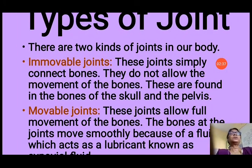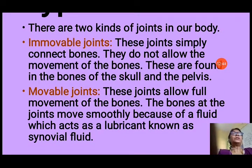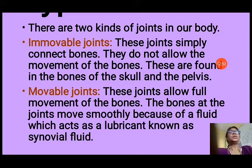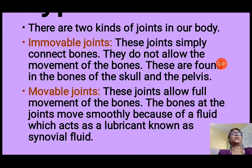Now, the types of joints. There are mainly two kinds of joints in our body: immovable joints and movable joints. Immovable joints only connect the bones — they do not allow any movement. These are found in the bones of the skull and pelvis. The only movable joint in the skull is the lower jaw bone, also known as the mandible. All other bones in the skull are immovable.